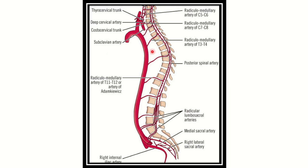Regarding the blood supply of the vertebral column, the lumbar vertebrae receive blood supply directly from the abdominal aorta. The abdominal aorta enters the abdomen at the level of the twelfth thoracic vertebra, and blood vessels arising from it supply the vertebral column. There is also the artery of Adamkiewicz — this is a very important artery representing a special type of blood supply to the vertebral column.